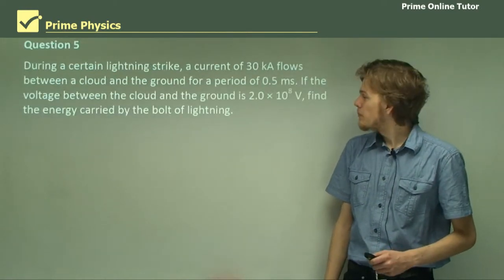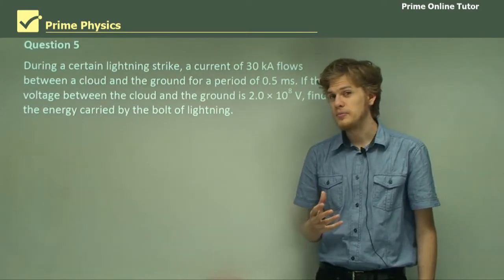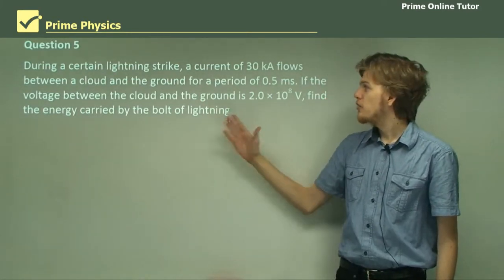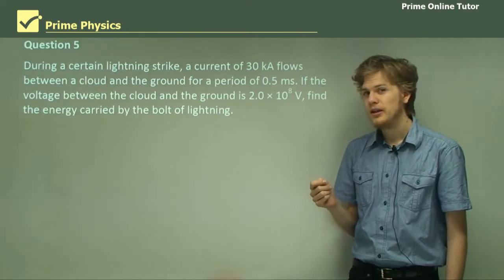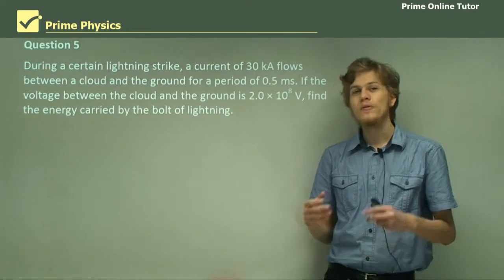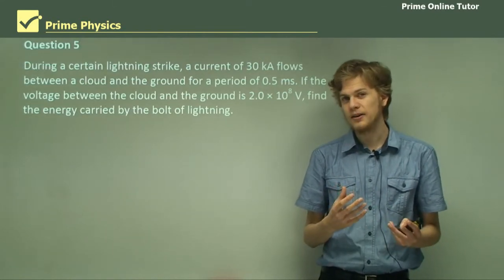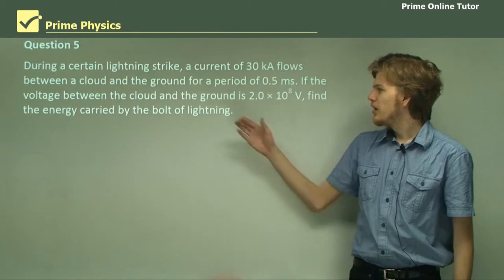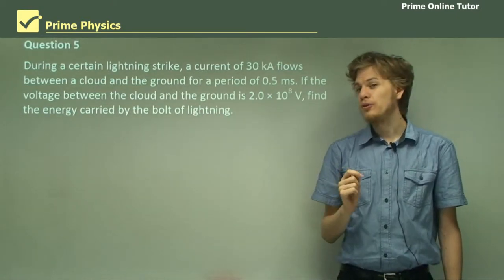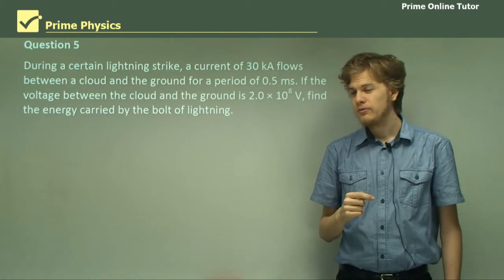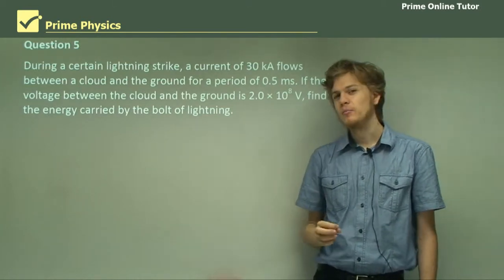Question 5. During a certain lightning strike, a current of 30 kilo amps flows between a cloud and the ground for a period of 0.5 milliseconds. That is half of a thousandth of a second, or one two thousandth of a second. If the voltage between the cloud and the ground is 2 times 10 to the power of 8 volts, that is 200 million volts, find the energy carried by the bolt of lightning.